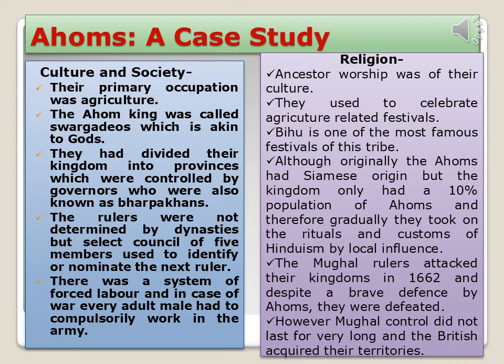The primary occupation of the Ahoms was agriculture. The Ahom king was called Swargadeos, meaning 'king of gods.' Their kingdom was divided into provinces controlled by governors known as Barpa Khans. Rulers were not determined by dynasties; instead, a select council of five members identified and nominated the next ruler. There was also a system of forced labor, and in times of war every adult male was compulsorily required to serve in the army. Ancestor worship was central to their culture, and they celebrated agriculture-related festivals. Bihu is one of the most famous festivals of this tribe. Although the Ahoms had Siamese origins, only about 10% of the kingdom's population were Ahoms, and they gradually adopted the rituals and customs of Hinduism through local influence.